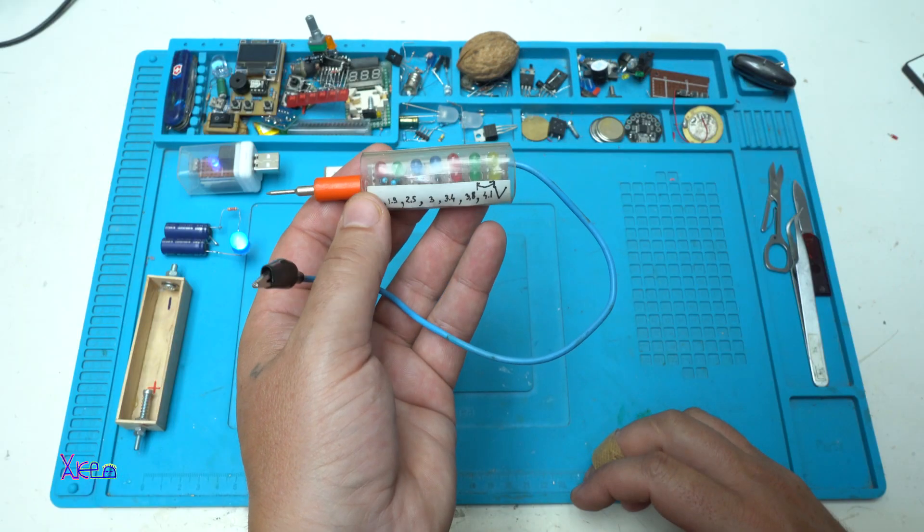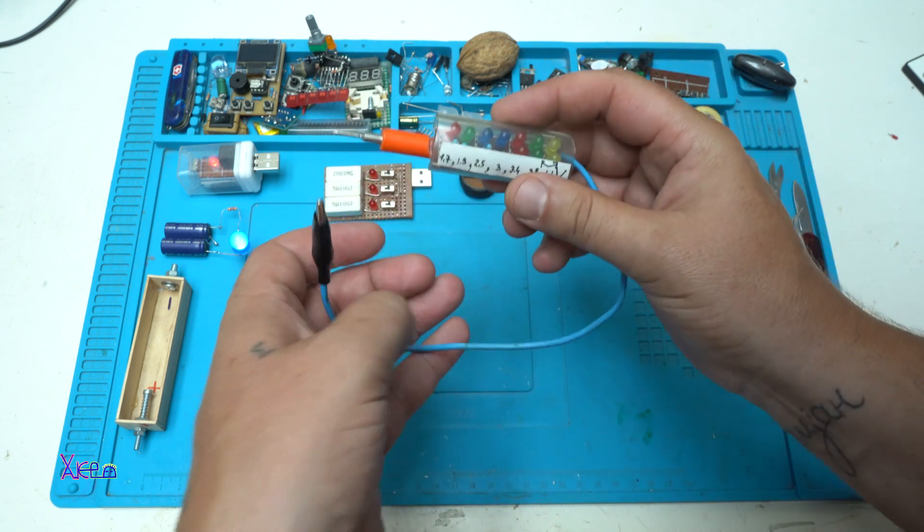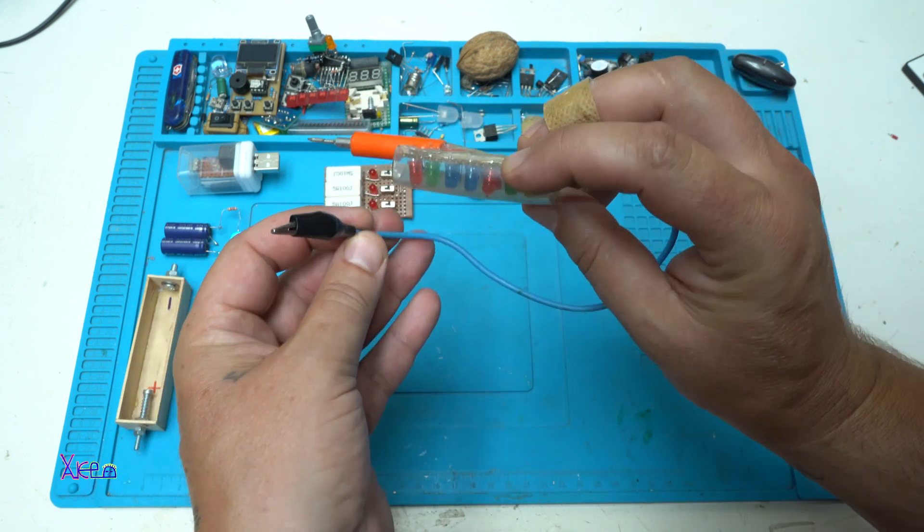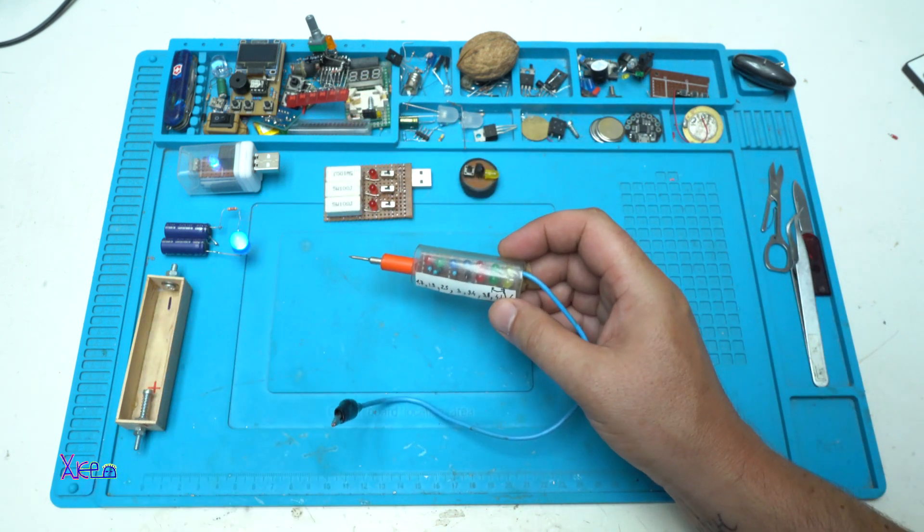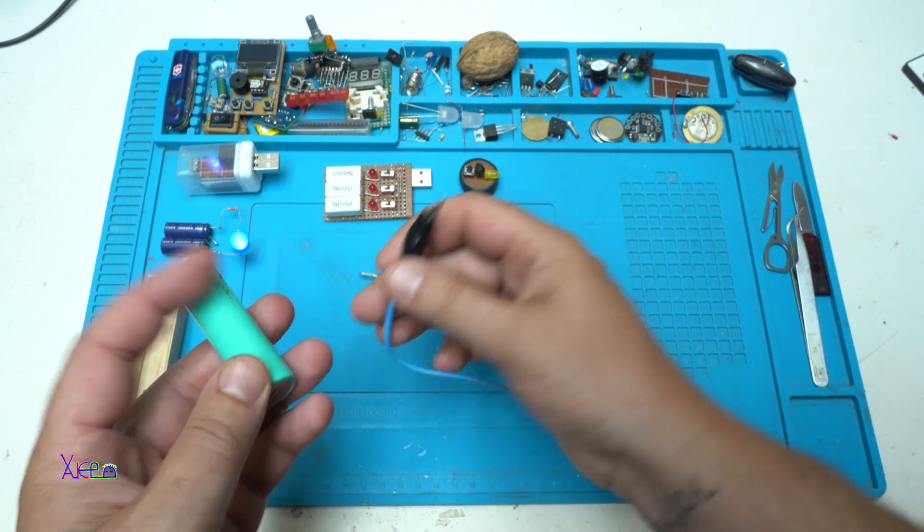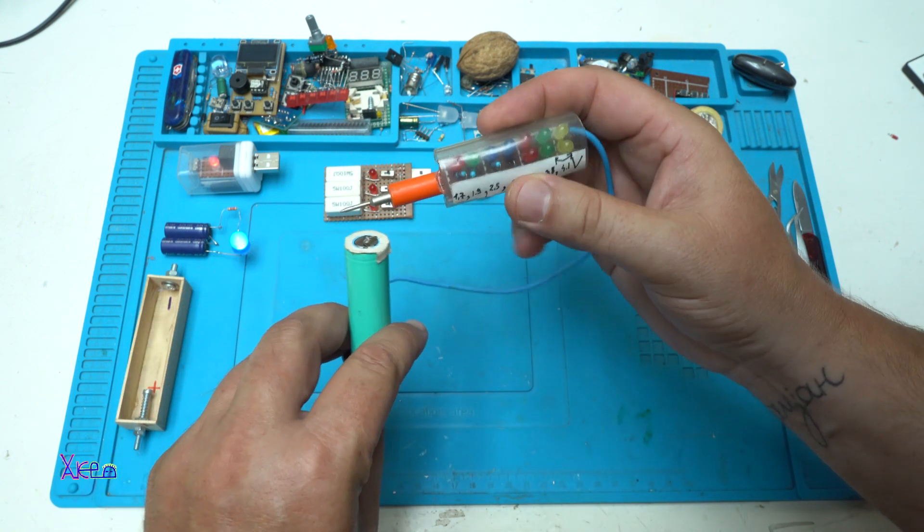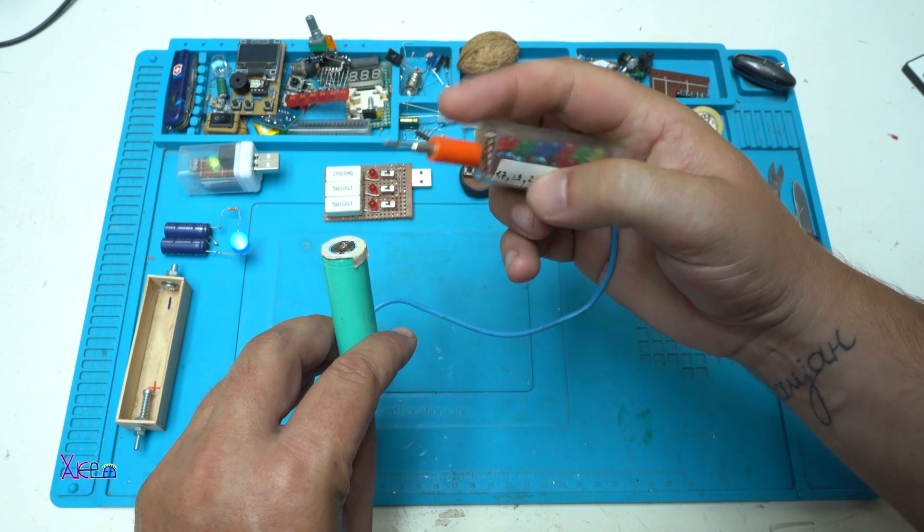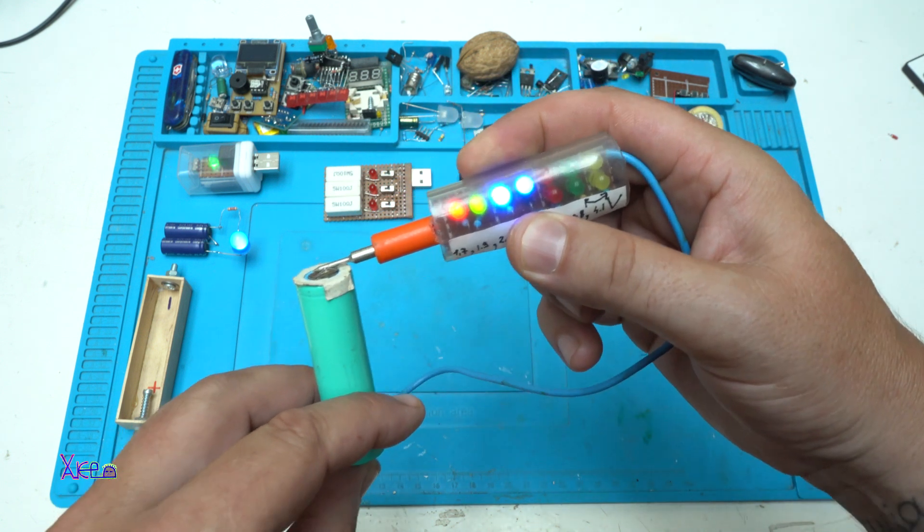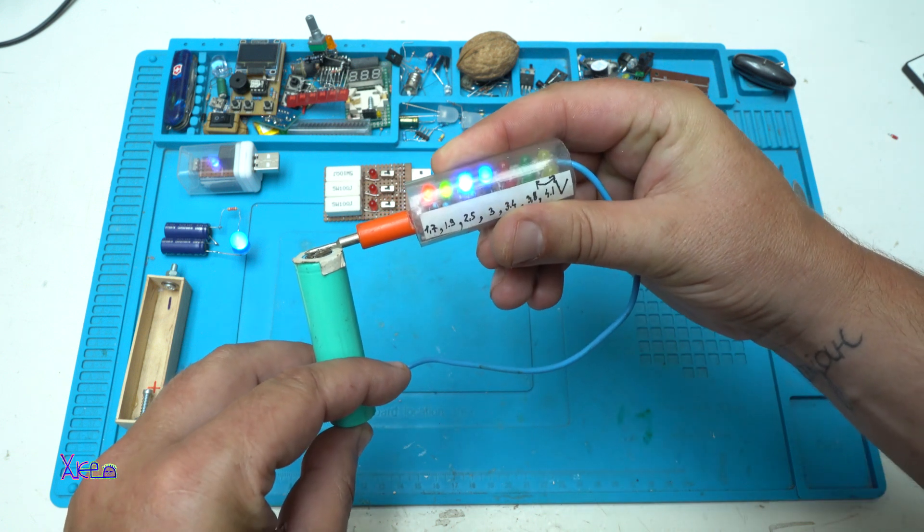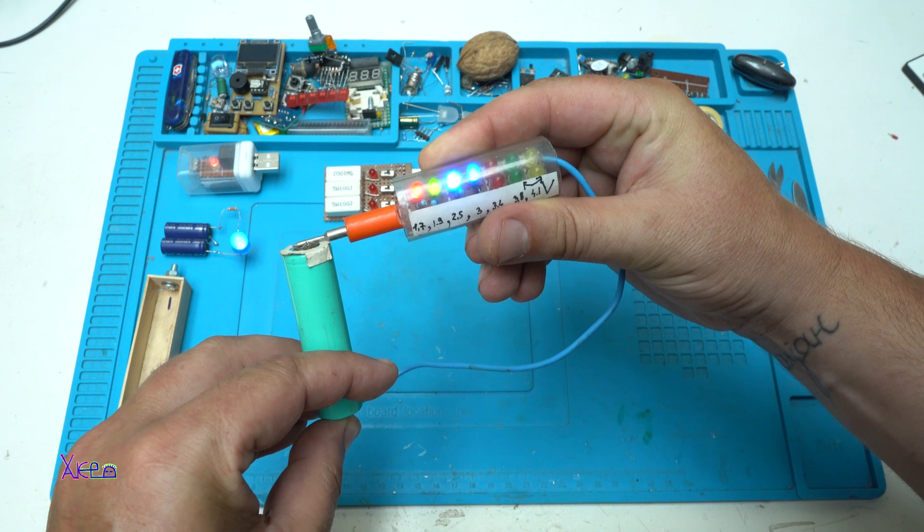You can check the circuit diagram in the link below and the full video how I made this. It works without batteries. Let's grab a battery. This is the negative side that goes to the battery we want to test and this is the positive probe. You can see it's charged around 3.4 volts.